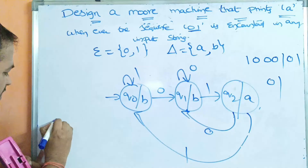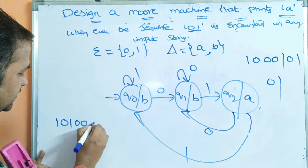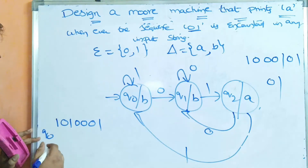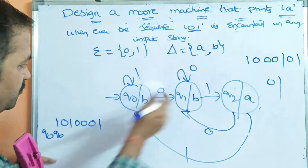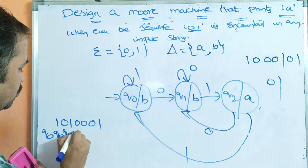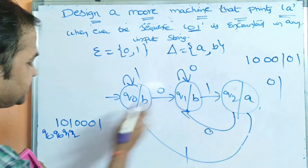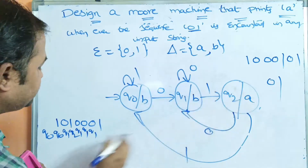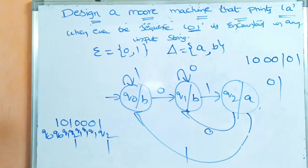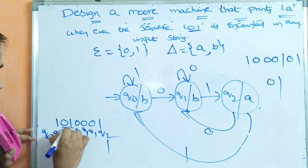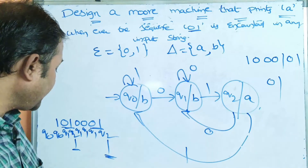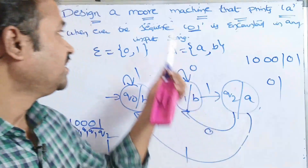Let's verify with input string 1, 0, 1, 0, 0, 0, 1. Starting from Q0: Q0 on 1 → Q0, Q0 on 0 → Q1, Q1 on 1 → Q2 (output A — first 001 found), Q2 on 0 → Q1, Q1 on 0 → Q1, Q1 on 1 → Q2 (output A — second 001 found). The remaining states output B. So 1+1=2; the 001 sequence is present twice in the string. This is how we solve Moore machine problems.